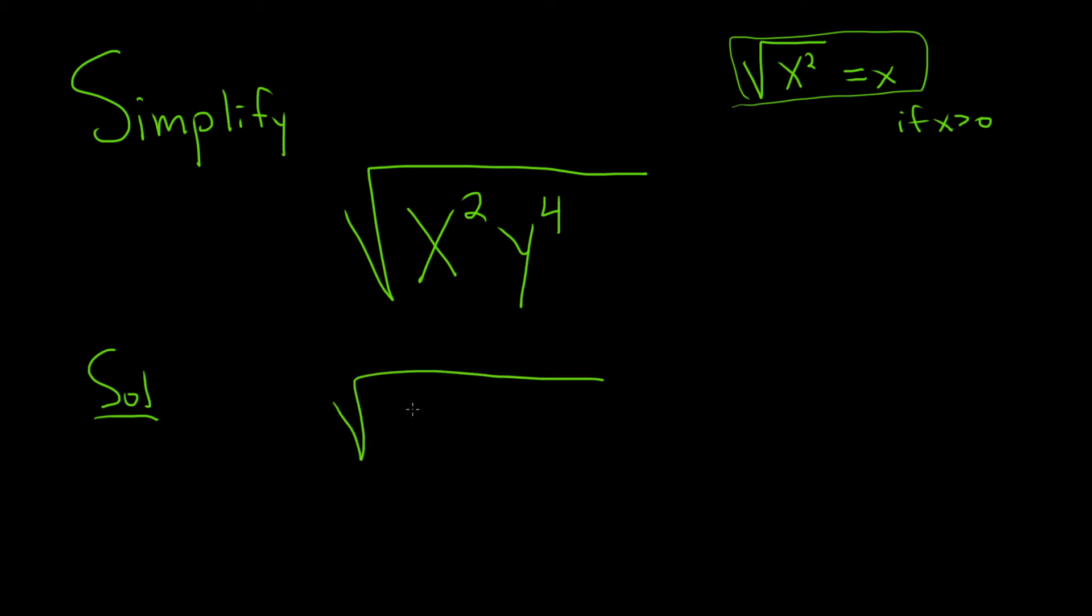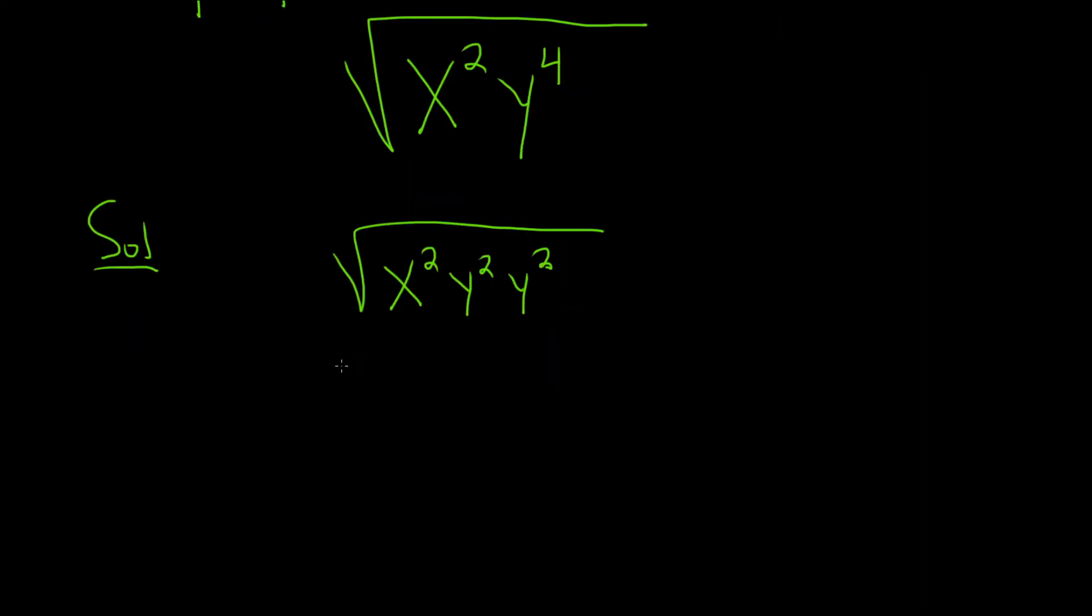So we can write this as x squared, y squared, y squared. And then you can basically just take the square root of each piece.